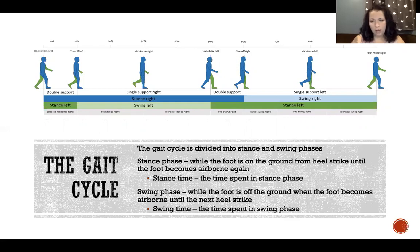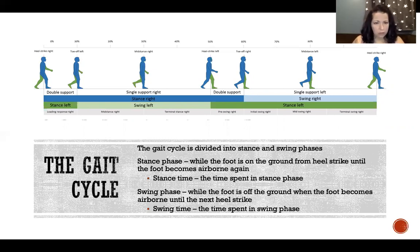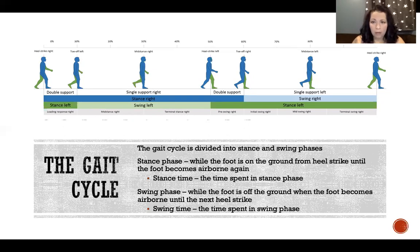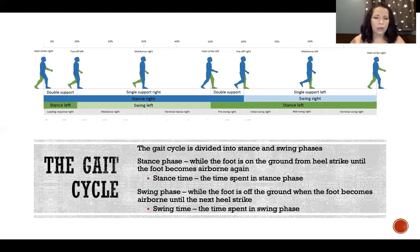I want to clarify that we define stance and swing phases per leg. Looking at a diagram, you can't just say someone is in stance or swing without specifying which leg. In some phases the right leg is in stance while the left is in swing, and vice versa, and sometimes both are in stance. So when naming the phase of the gait cycle, you always need to specify left or right, because the limbs are doing opposite things throughout the gait cycle.